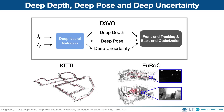In this work, we propose D3VO, a novel monocular visual odometry framework which exploits deep neural networks on three levels: deep depth, pose, and uncertainty. D3VO integrates the three estimations tightly into both the front-end tracking and back-end optimization of a sparse direct odometry framework. Evaluation results show that D3VO can deliver comparable results to state-of-the-art stereo, LiDAR, and visual-inertial odometry while using only a single camera.